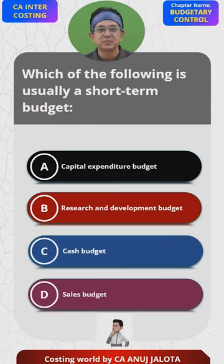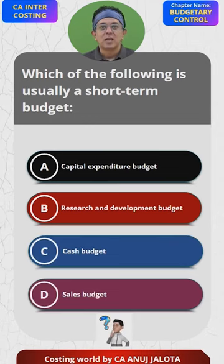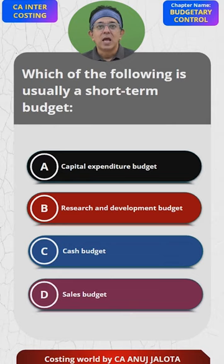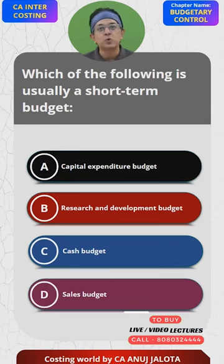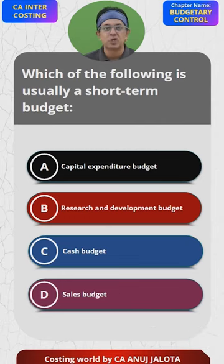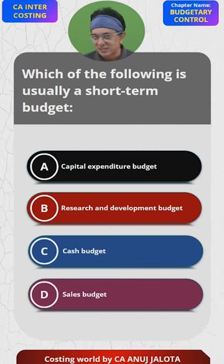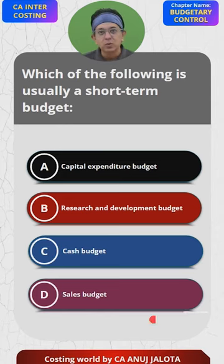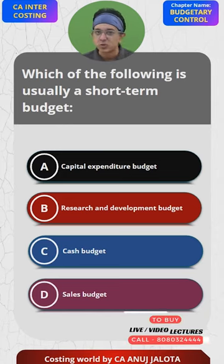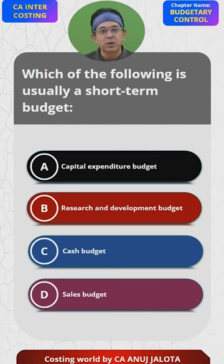Think of the answer. A and B — their names alone tell you that these are usually for a longer period of time. Capital budget, Research and development budget — so A and B are scratched out. Left is C and D. As compared to sales budget, we always say that cash budget is an immediate requirement.